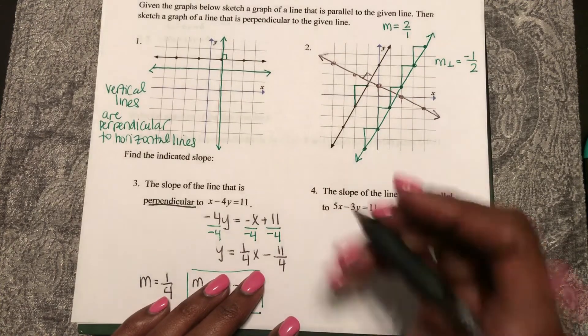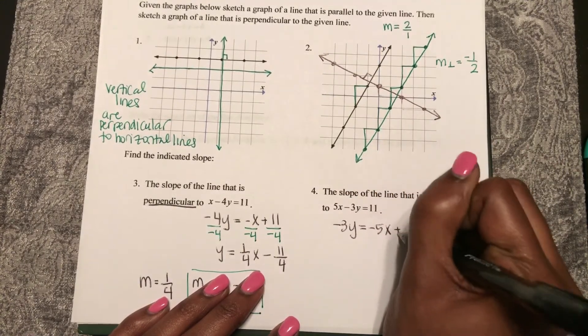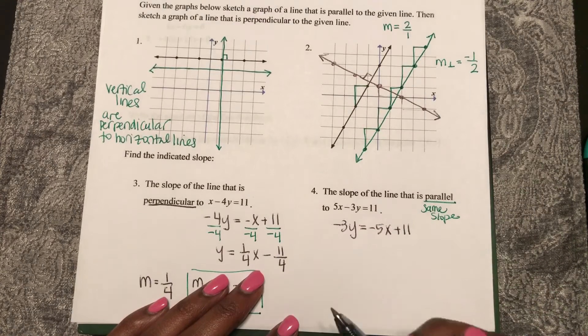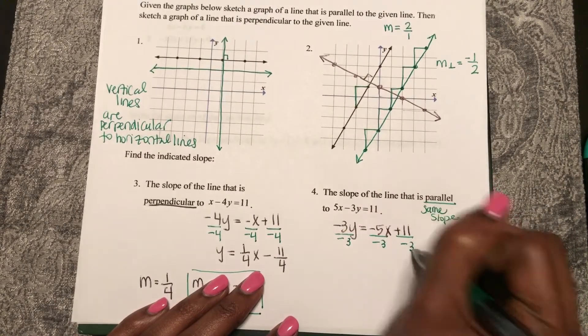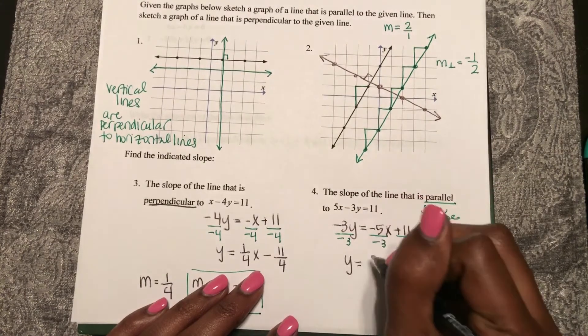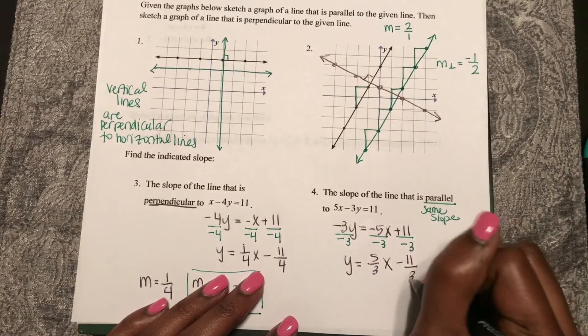First, I will subtract 5x. Negative 3y equals negative 5x plus 11. And then I will divide by negative 3. And I'll have y equals 5/3x minus 11 over 3.